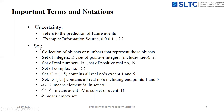Coming to the second term: set. Set is the most important term used in probability theory. A set means the collection of objects or numbers that represent those objects. For example, tossing a coin can produce two possible outcomes: head and tail. The set contains both outcomes — head and tail — representing all possible outcomes as a set.